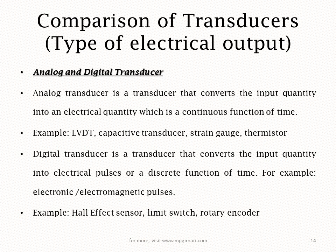Now coming on to the digital transducer. The definition is: digital transducer is a transducer that converts the input quantity into electrical pulse or a discrete function of time. Yahan pe — continuous function of time vs discrete function of time — yeh fark hai in between these two.